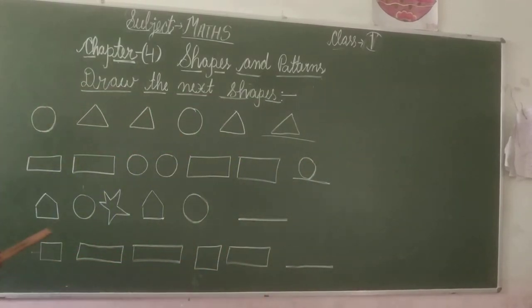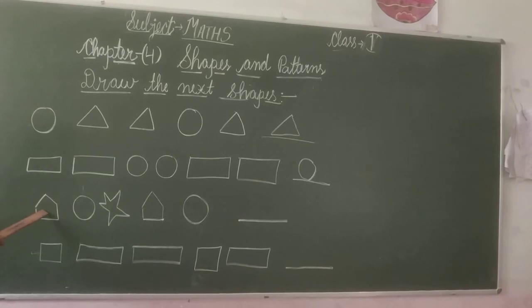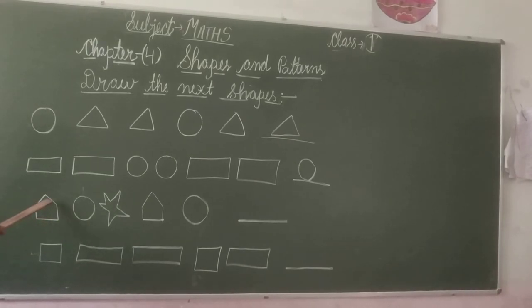My third question. This shape is pentagon: one, two, three, four, five—five sides. This is pentagon. Pentagon, circle, star. Pentagon.